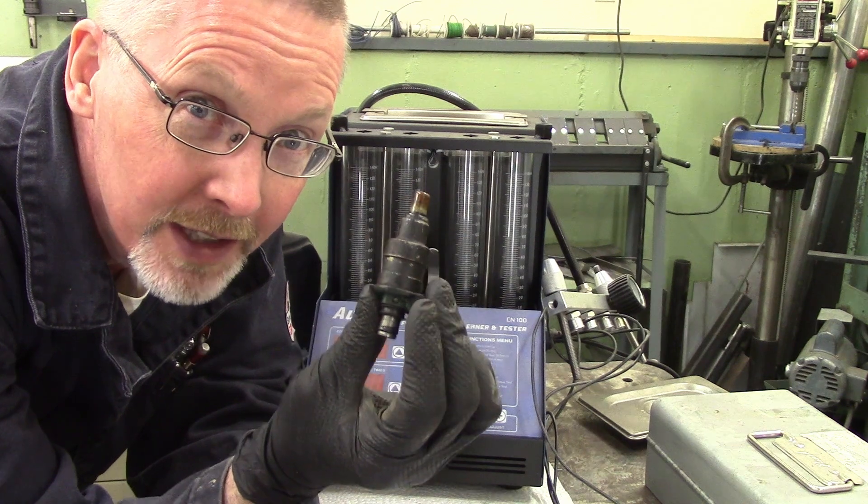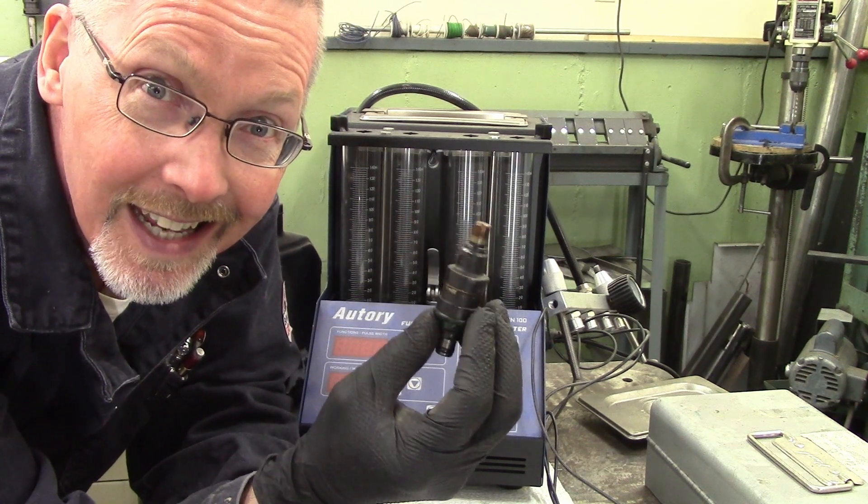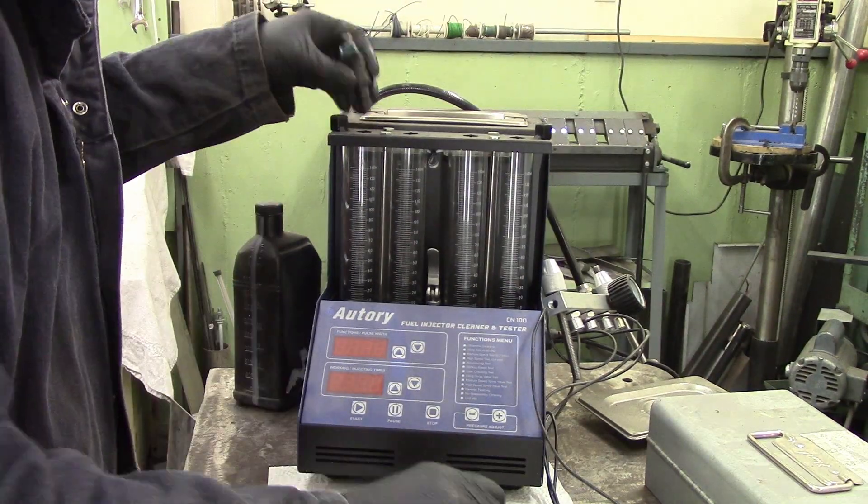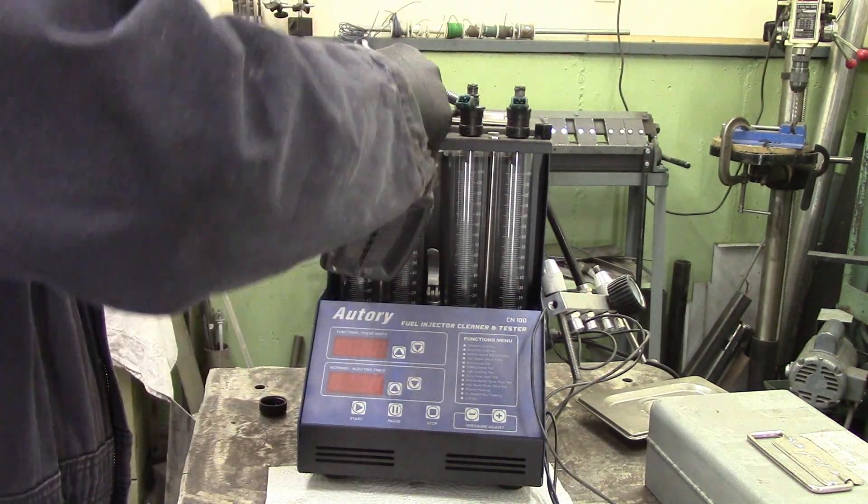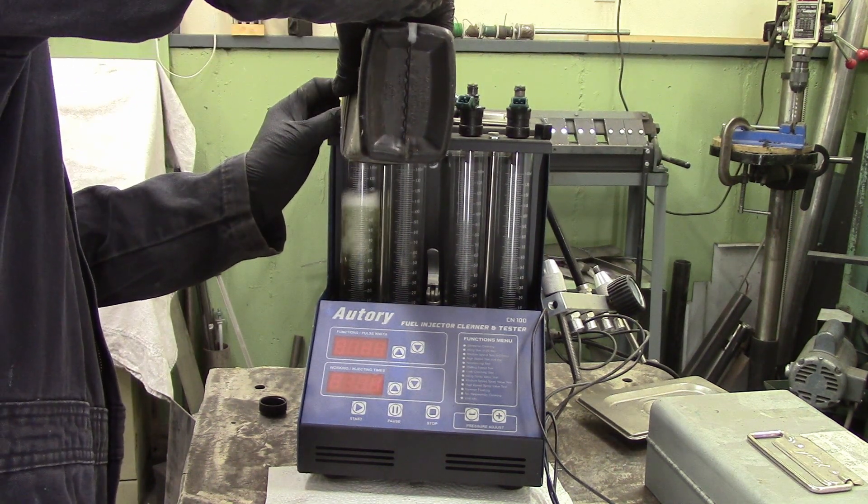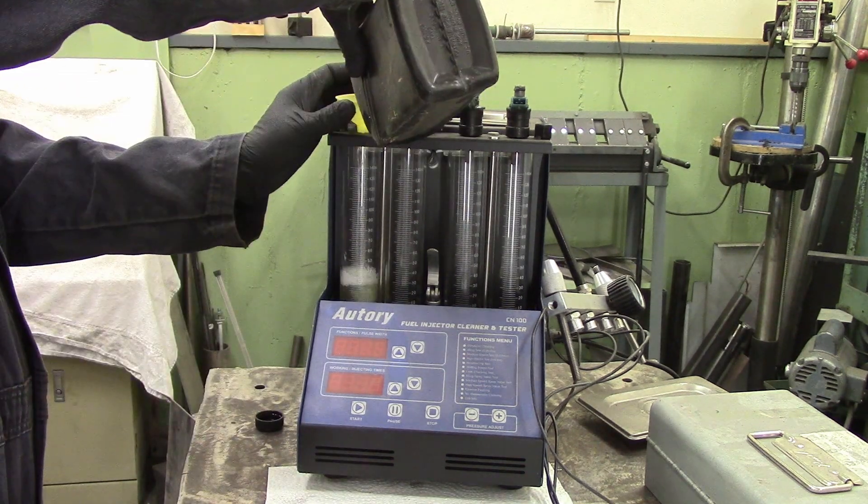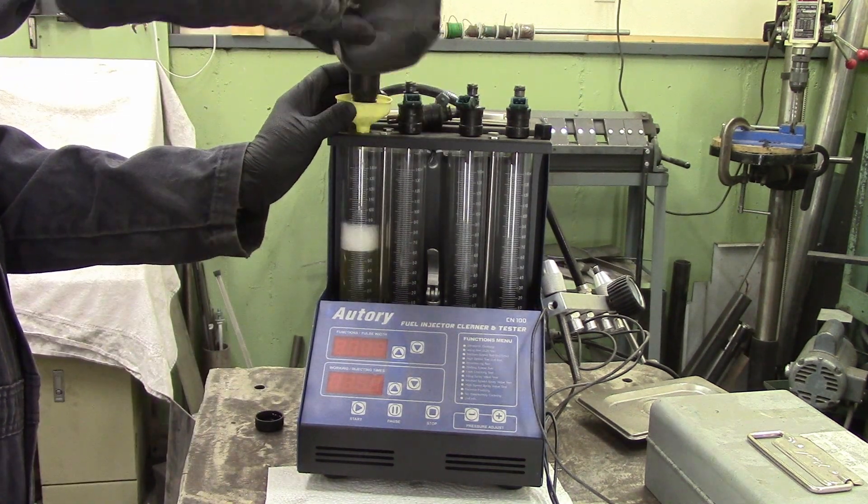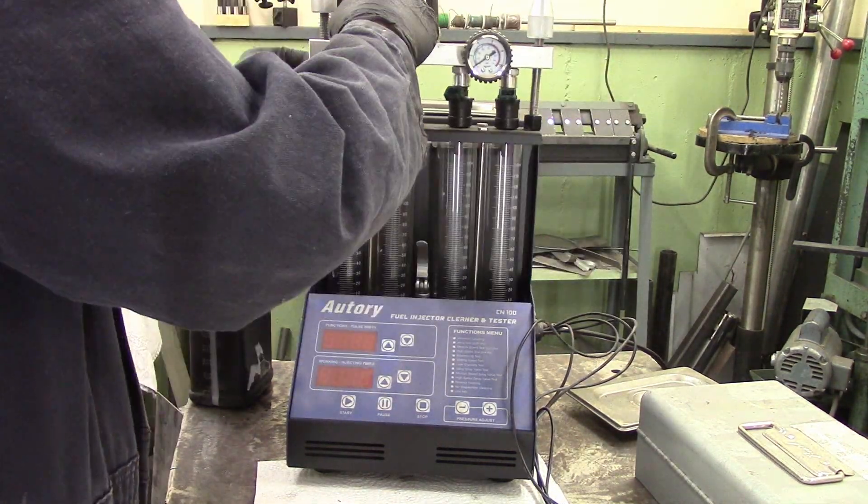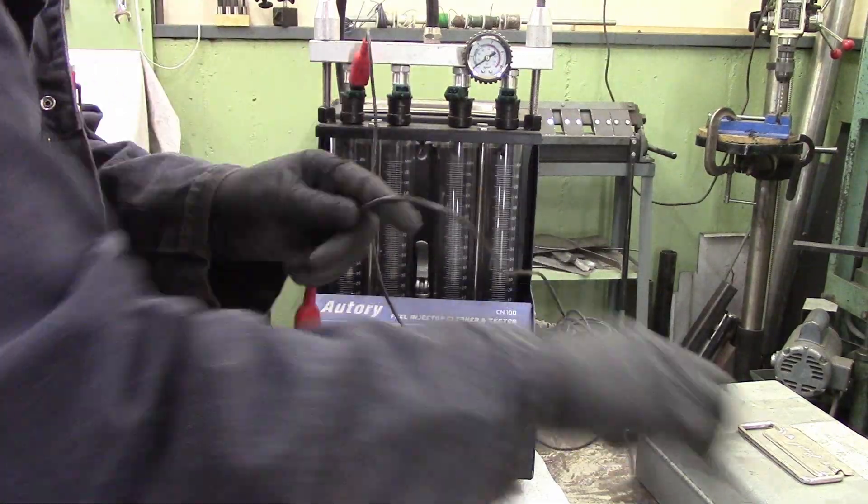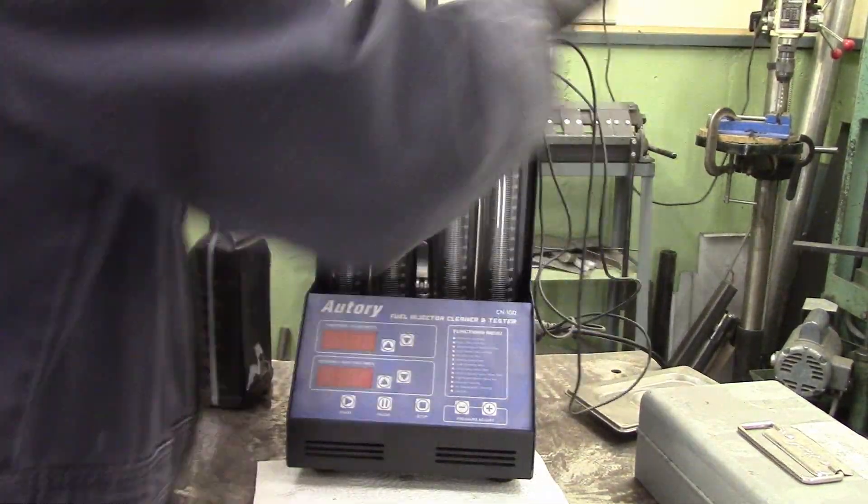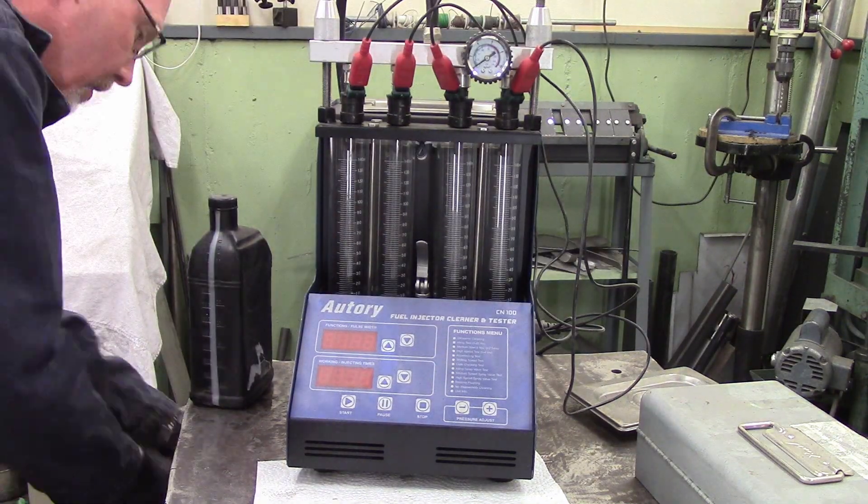We're going to do these Toyota injectors, but first we need to see how they flow at the moment. This thing won't actually measure the actual full flow of your injectors, but the gradients will help you at least compare different injectors with each other, which is really all I'm after. I'm using mineral spirits as a solution to run through this. It seems to be pretty good for not foaming up, and it doesn't harm the injectors. It's basically a paint thinner that's pretty mild.